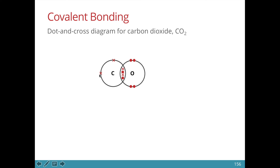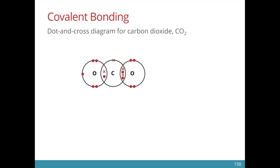Carbon still needs two more electrons after the first double bond with oxygen. We need another oxygen atom to come in and bond to carbon. If this oxygen atom were to form only one bond with carbon, oxygen would have seven electrons — one short of the eight required. So oxygen forms a double bond with carbon. Now all atoms have eight valence electrons. We can represent the displayed formula like so.